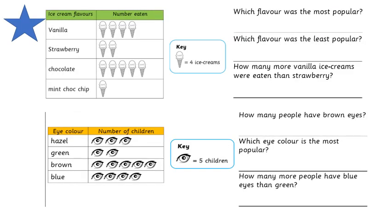Here are the two remaining pictograms. Ice cream flavours: which flavour was the most popular? Which flavour was the least popular? How many more vanilla ice creams were eaten than strawberry? And the final pictogram on eye colour: how many people have brown eyes? Which eye colour is the most popular? How many more people have blue eyes than green?